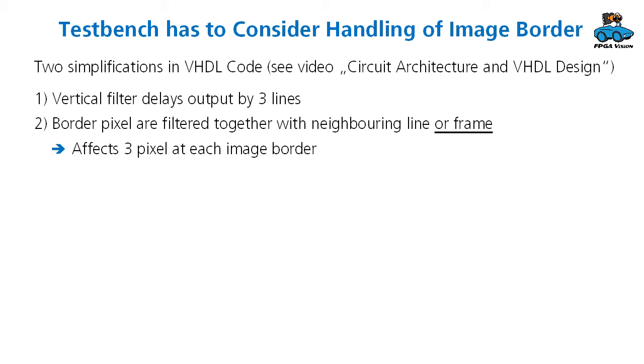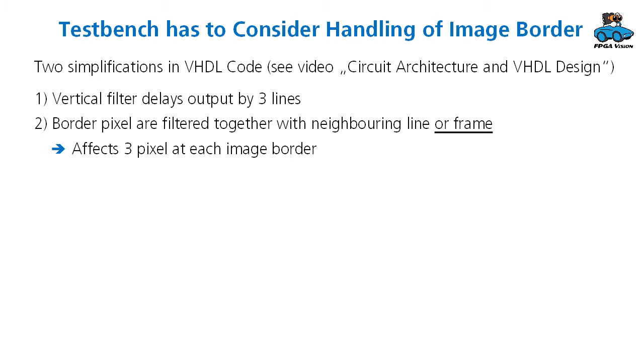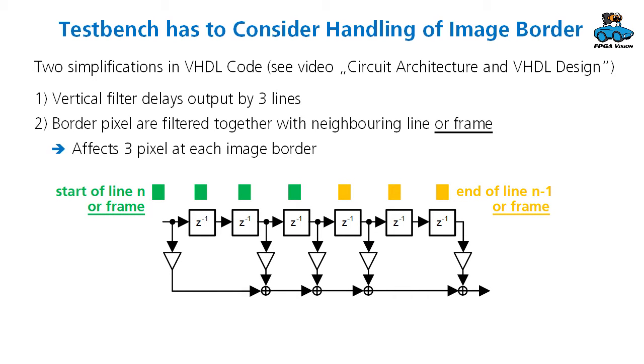And this affects three pixels at each border. So this is the graphic for it. The memory for the FIR filter contains at the border a mix of start of line, end of line or start of frame, end of frame. So the magical number three results from having a seventh filter according to this equation.